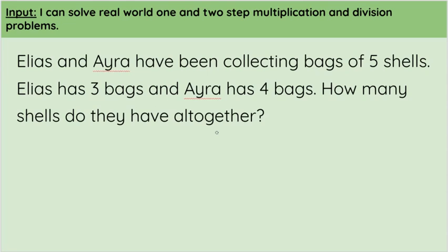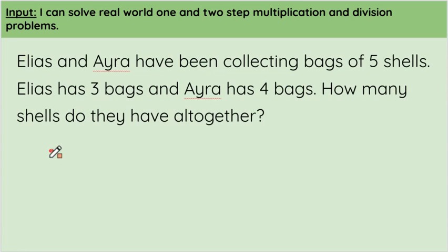So that means we need to figure out how many shells Elias has, and then we can figure out how many shells Ira has. Each bag of shells has five inside and Elias has three bags, so we can do three multiplied by five. That's going to be our first problem.